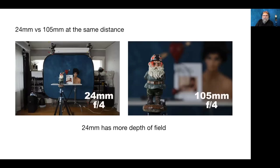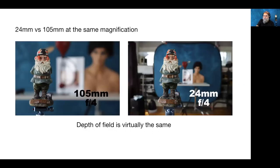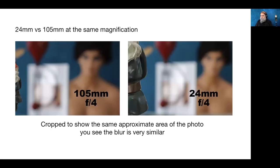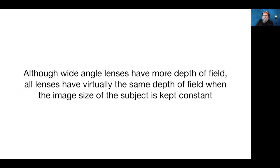So the takeaway: wide-angle lenses do have more depth of field when shot from the same distance, but all lenses have the same depth of field when the image size — or magnification — is constant. Focal length alone is not a contributor to depth of field; you need to combine focal length with distance, or magnification. Magnification and f-stop are your real controls.